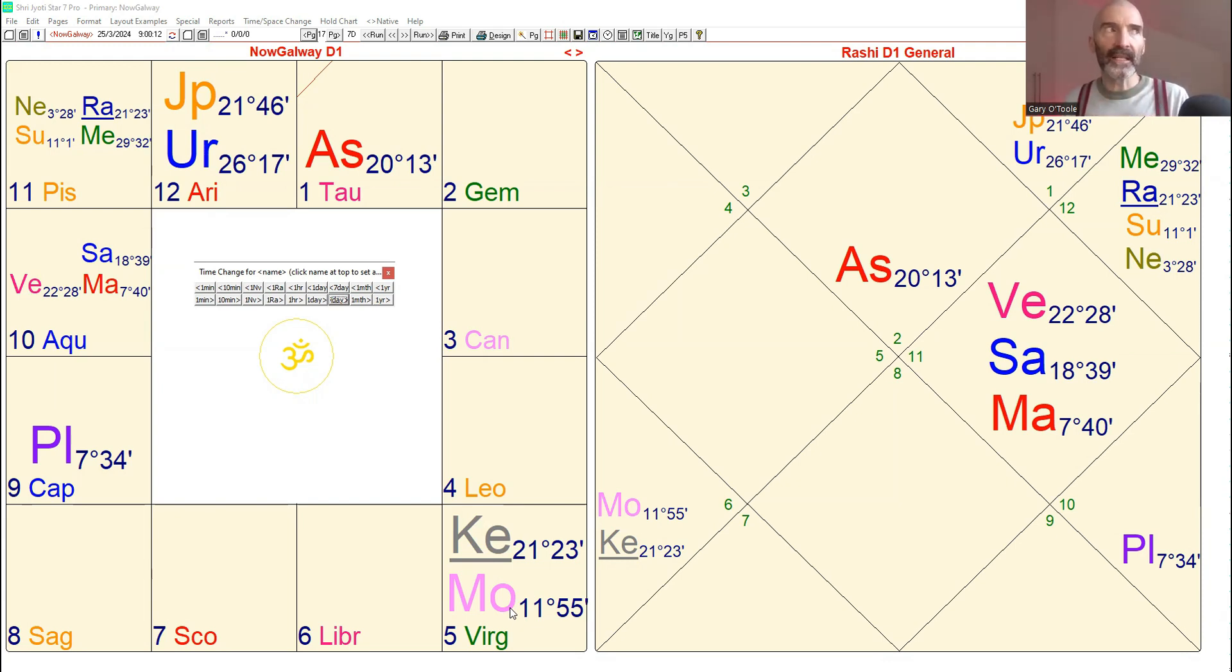And it's a very productive sign and it's a lunar mansion that's very productive. Hasta is the name of this lunar mansion in the middle of Virgo, which is literally meaning hand. So it's like manifesting something, making something, managing something, maybe even micromanaging in this case.